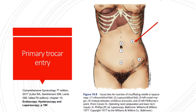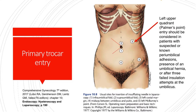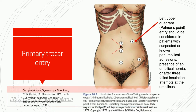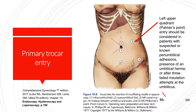The usual sites for insertion of the insufflating needle or primary trocars include the infraumbilical fold, which is the most common site; the supraumbilical fold; the left costal margin in the left upper quadrant, also known as Palmer's point, which is used for patients with suspected or known periumbilical adhesions, umbilical hernia, or after three failed insufflation attempts at the umbilicus; the area midway between the umbilicus and pubis; and finally, the left McBurney's point.